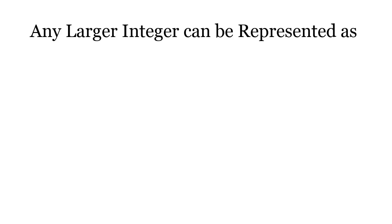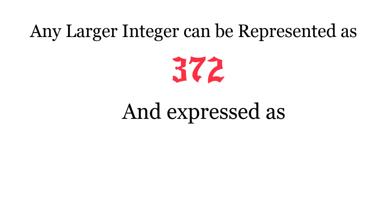Any larger integer can be represented as such. 372 can be represented in the form 300 plus 70 plus 2 equals 3 into 10 to the power 2 plus 7 into 10 plus 2 and is denoted in the decimal system by the symbol 372.